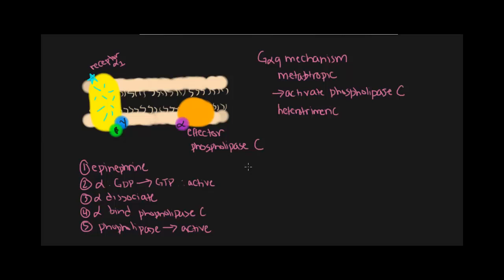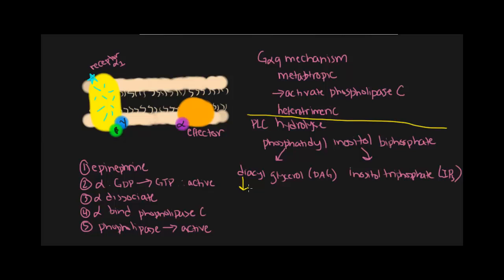The purpose of phospholipase C, also known as PLC, is to hydrolyze phosphatidyl inositol biphosphate. This results in the production of diacylglycerol, also known as DAG, and inositol triphosphate, also known as IP3. These in turn set off different effects in the cell.